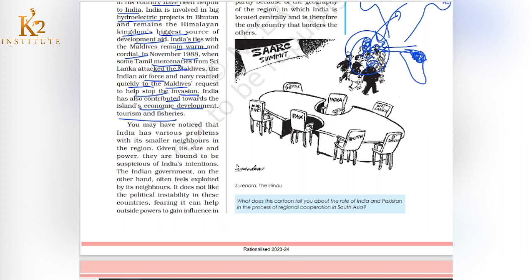India has many small problems with its small neighbors. These small countries are suspicious of India's intentions — they think that because India is more powerful, India will try to dominate South Asia. On the other hand, the Indian government often feels exploited by its neighbors even while helping them. India also does not like political instability in these countries — for example, if Bangladesh has internal political conflict, it results in immigrants coming to India.